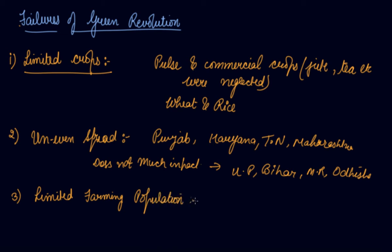Third is limited farming population. The green revolution mainly focused on new and modernized techniques, intensive irrigation facilities, and expensive inputs. So poor farmers were not able to afford them. Although subsidies were given, they did not sufficiently cover irrigation or expensive input facilities. Means of irrigation were grossly deficient and poor farmers often relied on weather to irrigate their fields. So the green revolution largely benefited only the rich farmers in India.